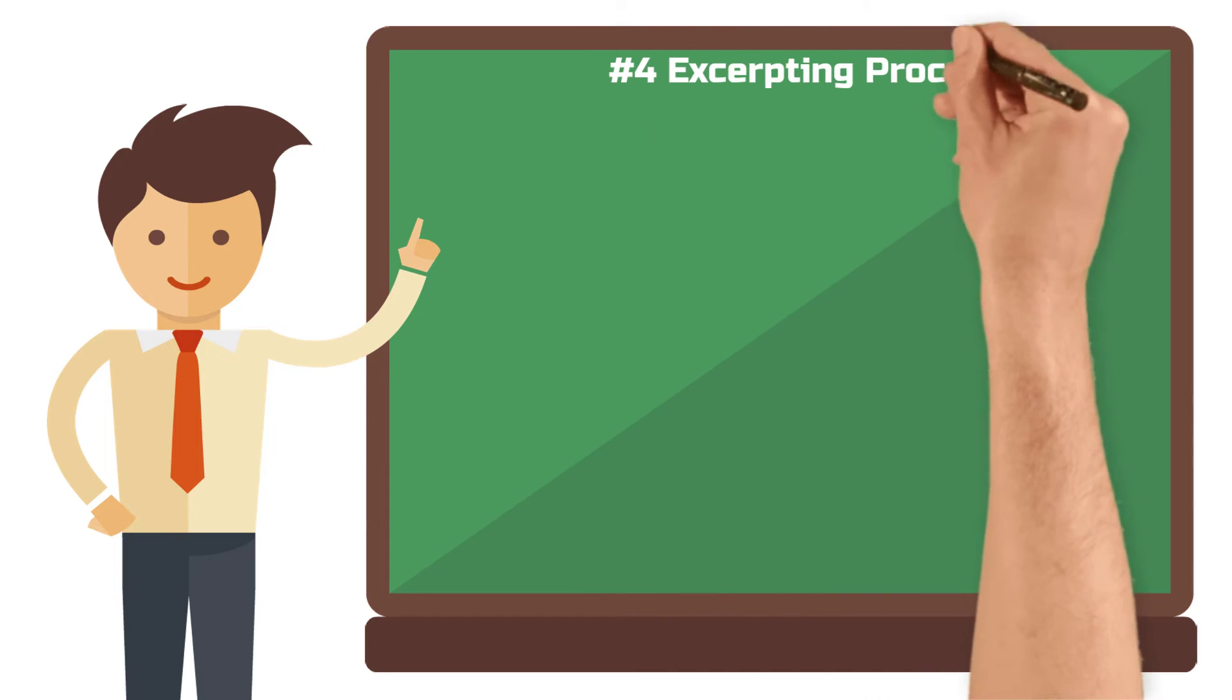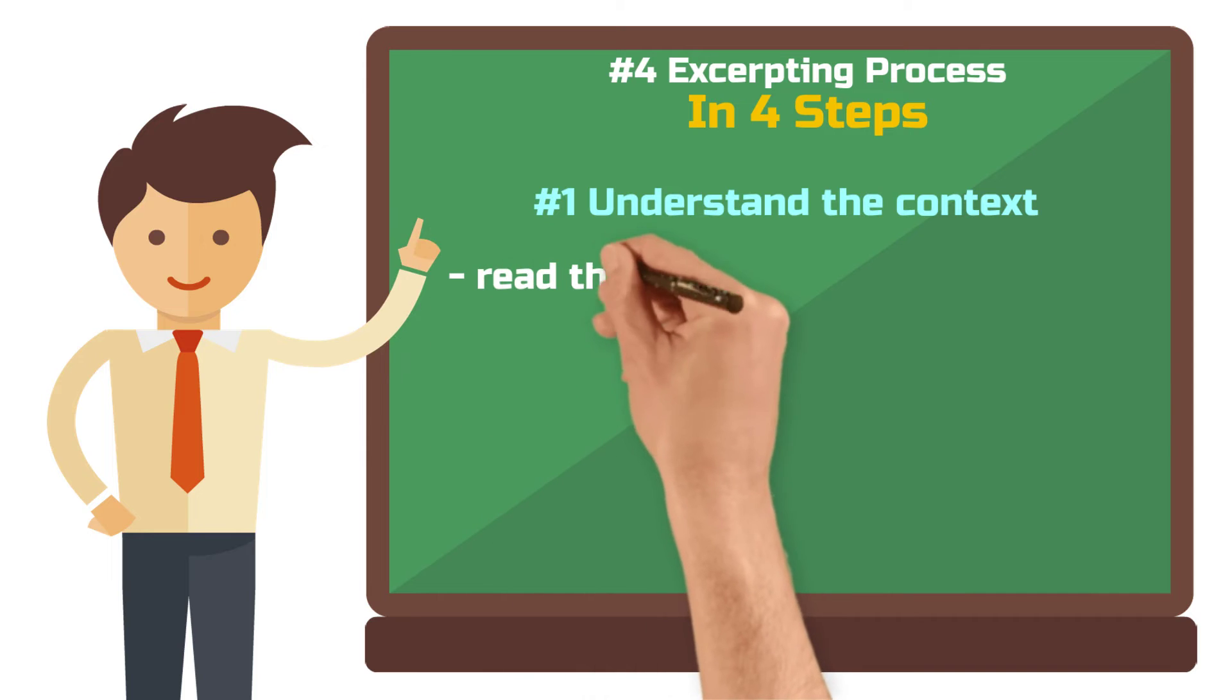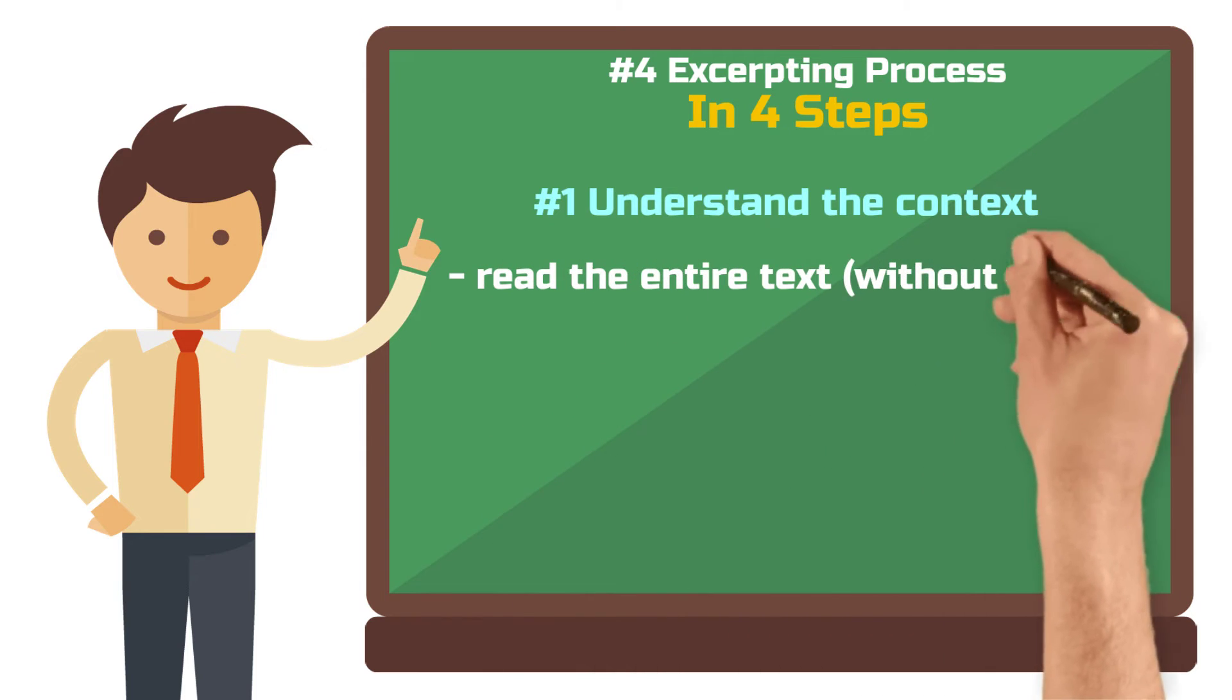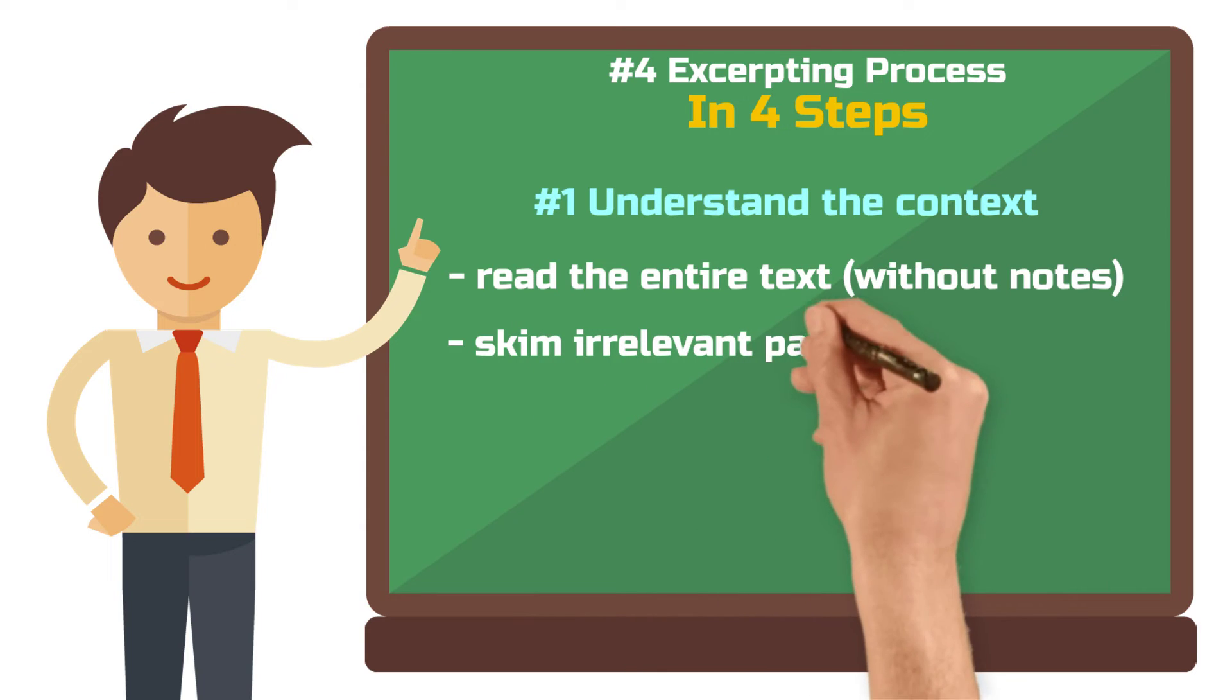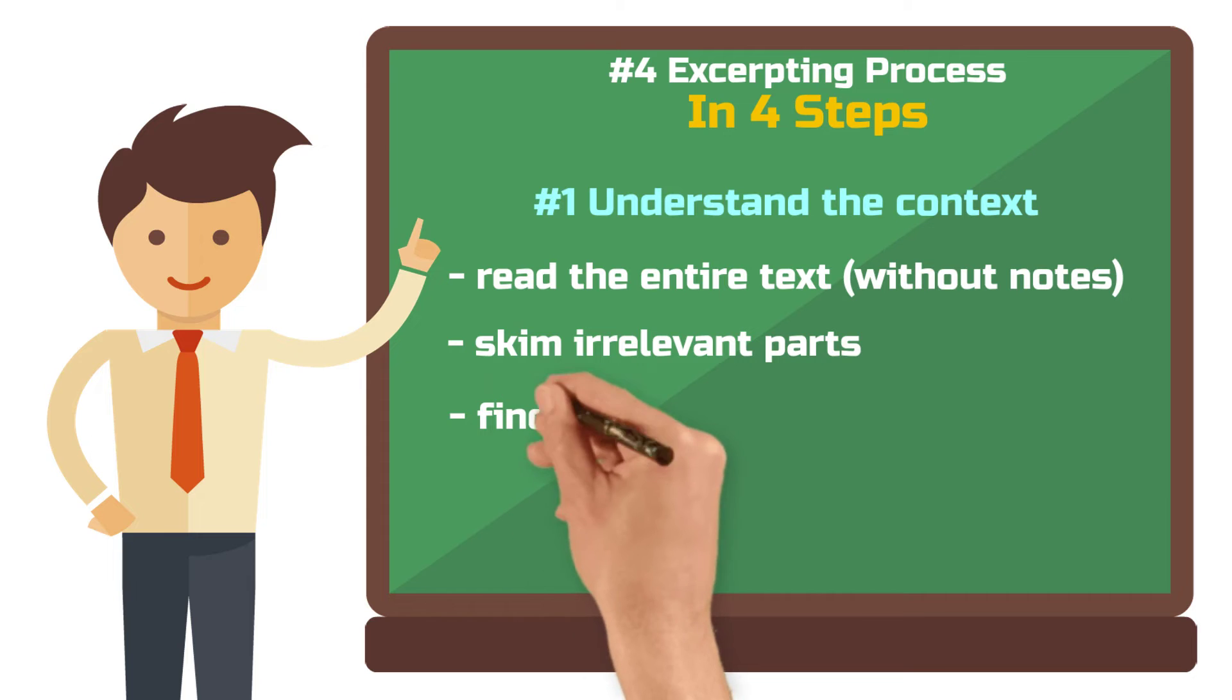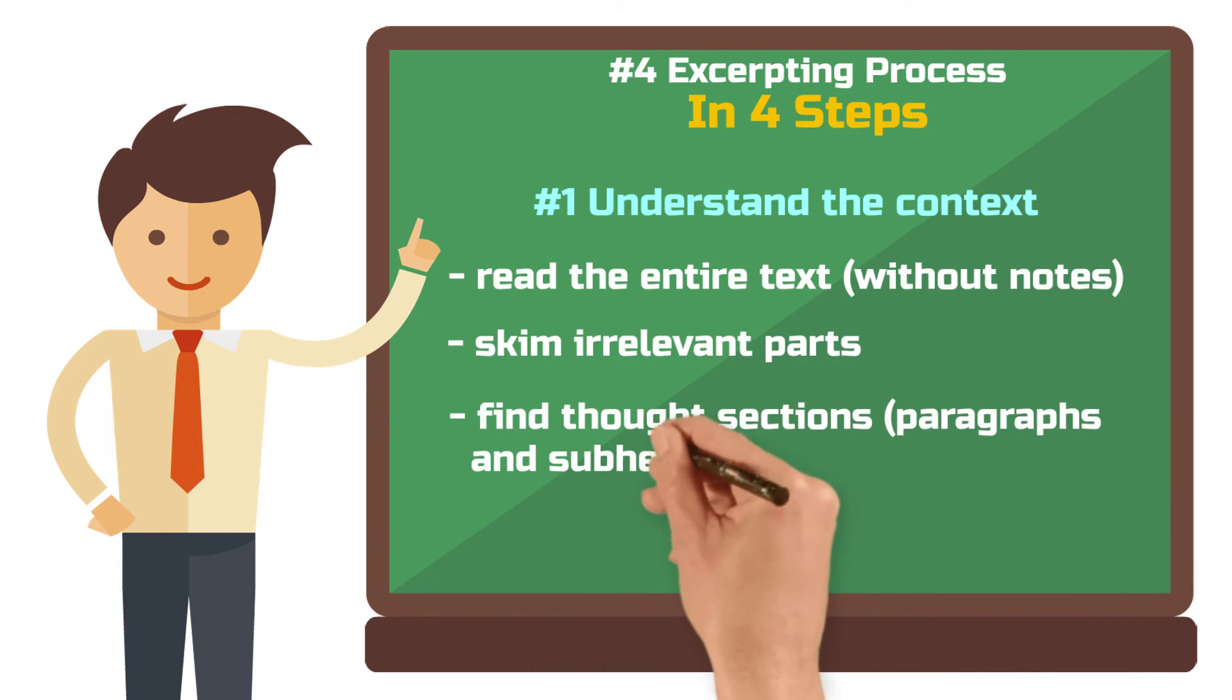Now let's start with the actual excerpting process, which I have divided into four steps. First, understand the context. Read the text in its entirety first. If you read a research paper, you can skim through the parts that are not relevant to you right now. The goal is to get a complete picture of the text without being interrupted too often. Here you can roughly estimate into how many and what kind of thought sections the text is divided. Often paragraphs and subheadings can also be of help.